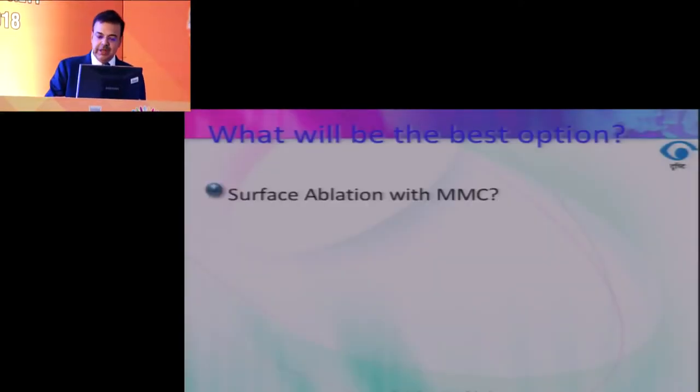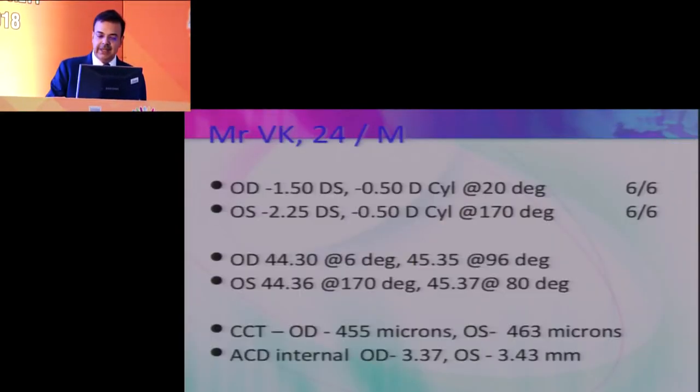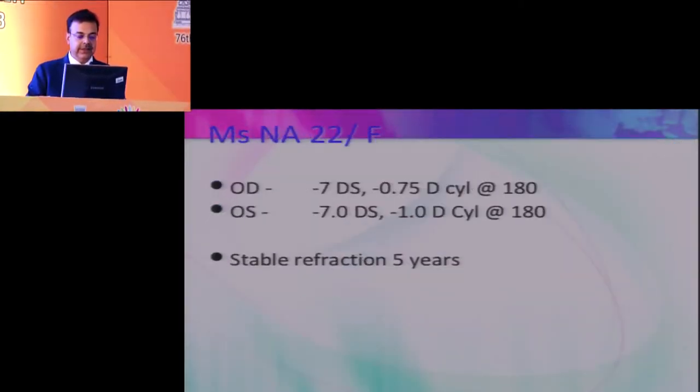Just a question, would anybody do smile or ICL on this patient? He has a very good AC depth. Would anybody want to do an ICL? I don't even know if they are available in this part but there are some people who don't do LASIK at all and they do only phakic lens. So anybody who would do ICL? No. Okay. So let's go to this next case. I would also do a surface extra as you said.